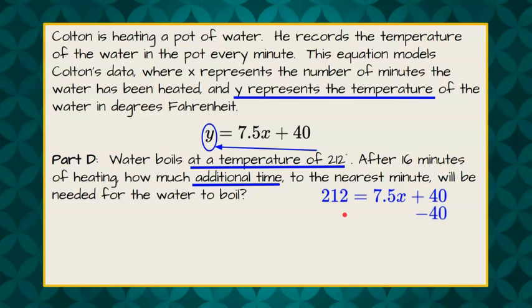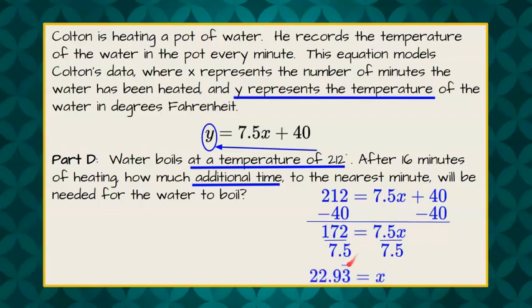We're going to subtract 40 from each side to isolate the variable term. 212 subtract 40 is 172. Now we want to solve for x, so we're going to divide each side by 7.5, and 172 divided by 7.5 is 22.93 repeating.